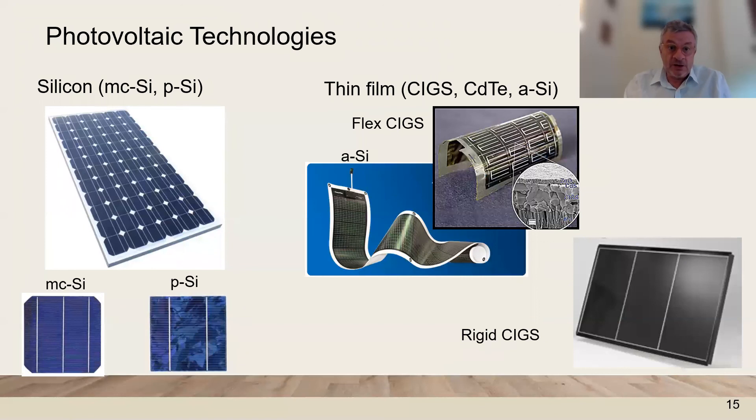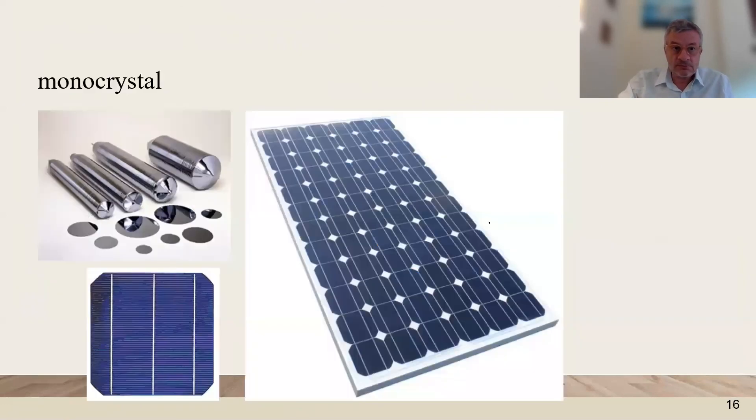In photovoltaic technologies, we have the dominant silicon solar cells, and some thin film, like CIGS, cadmium telluride, amorphous silicon, that are also produced industrially. The dominant is the silicon made from ingots.